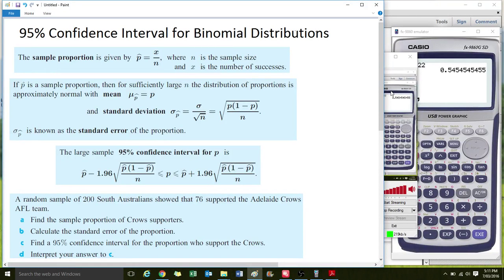Okay, so we're going to look at how we can find the 95% confidence interval for binomial distributions. And I'm going to explain what that means a bit later on.